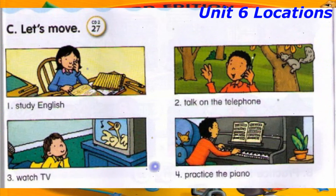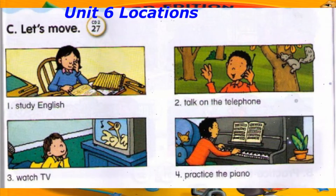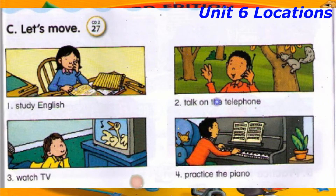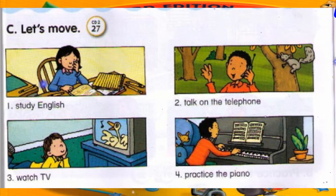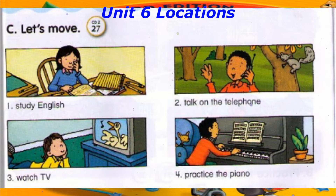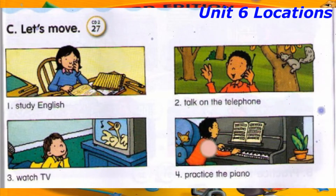Track 27. C. Let's Move. Track 28, C. Let's do it. Number 1: Study English. Number 2: Talk on the telephone. Number 3: Watch TV.